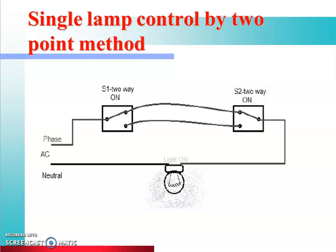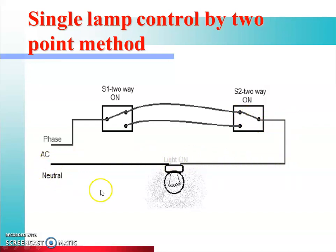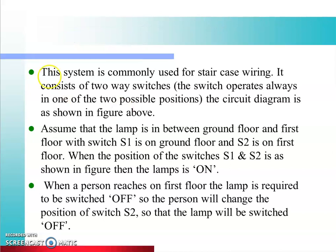Ab second, hum dekhenge single lamp controlled by two-point method. Is mein ek switch ki jagah do switches di gayi hain aur lamp introduce kiya gaya hai. Yeh system is commonly used for staircase wiring — it consists of two two-way switches. Yeh type ka jo lightning system hai, yeh staircase wiring — sidhiyon pe jo hoti hai — usmein use hota hai. Jaise sidhiyon pe hum chadh rahe hain, to hamne switch ko on kiya, light on ho gaye.